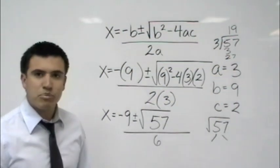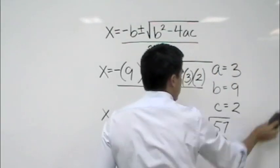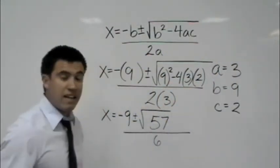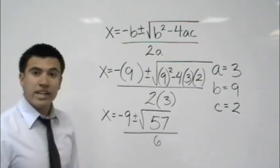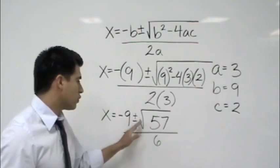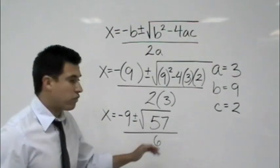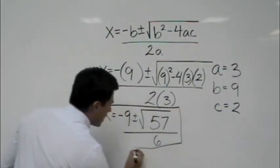So technically, we actually can't break it down very far. So we would just say it's the square root of 57. So by solving using the quadratic formula here, we would say x is equal to negative 9 plus or minus the square root of 57 over 6. And let's go ahead and box that because that is your answer.